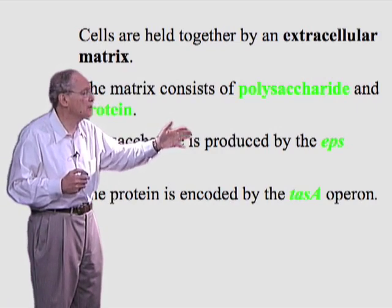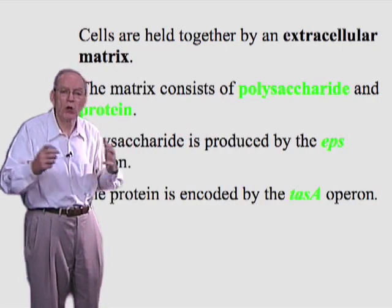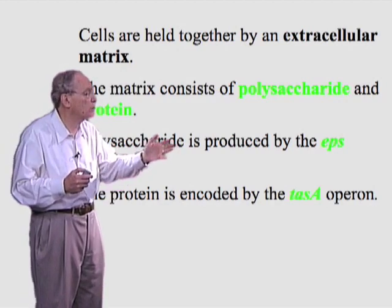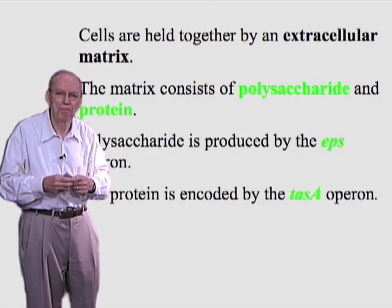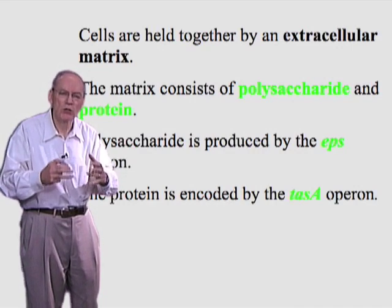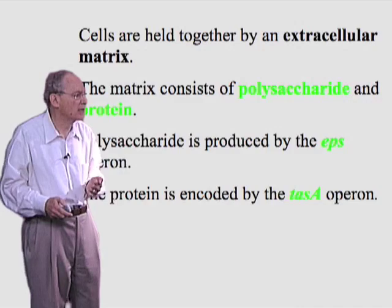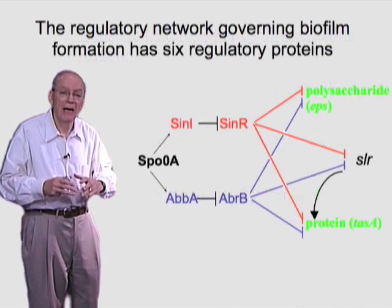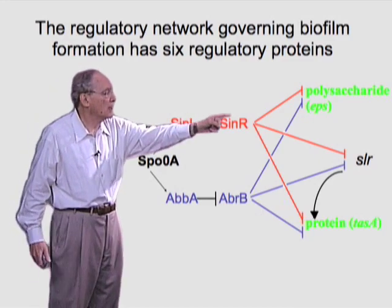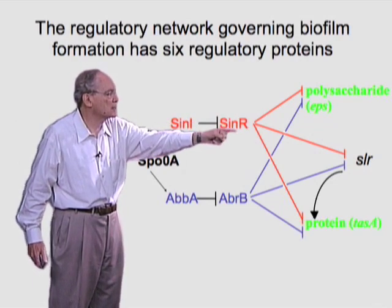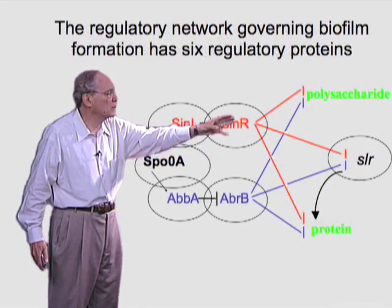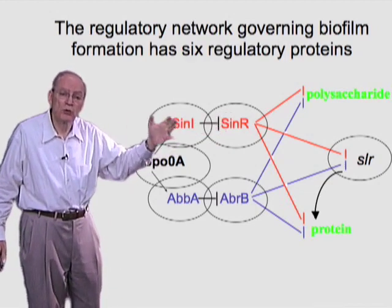The polysaccharide is produced by enzymes encoded within a large operon known as the EPS operon, for exopolysaccharide operon, and the protein is encoded within an operon referred to as the TasA operon. The turning on of these two operons under the right circumstances is mediated by an elaborate regulatory network that involves fully six regulatory proteins. On the right are the two operons — one for polysaccharide synthesis and the other for the protein — and circled are the six regulatory proteins that govern their expression.